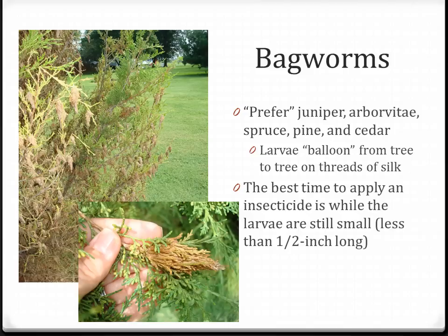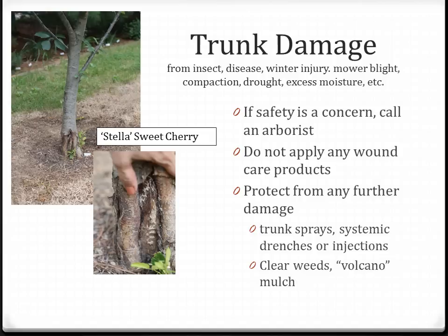Bagworms begin to build their case from surrounding materials as soon as they hatch. Bagworms prefer juniper, arborvitae, spruce, pine, and cedar. Trunk damage is often difficult to assess; if safety is a concern, call an arborist. Do not apply any wound care products, as they often interfere with the tree's natural ability to heal. Protect from further damage — for insects, apply trunk sprays, systemic drenches, or injections; for rodent control, clear away weeds and any volcano mulches that might provide protection from predators.